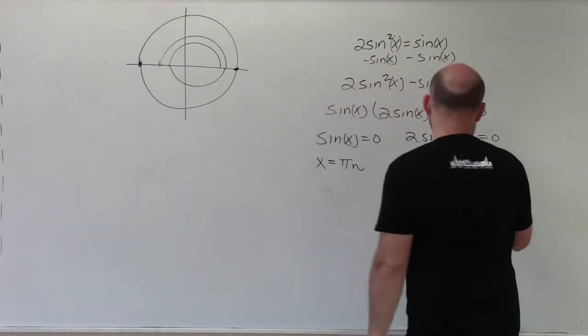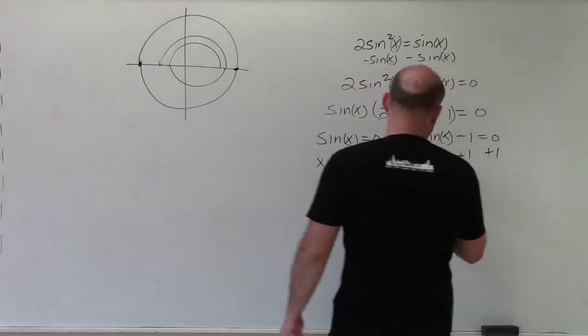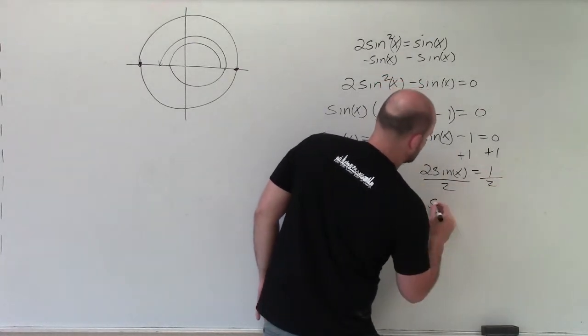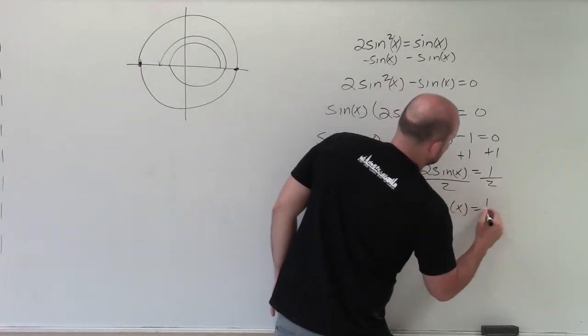Then for our next solution, we need to do a little work. So I'm going to add one on both sides. 2 sine of x equals 1, divide by 2, divide by 2, sine of x equals 1 half.